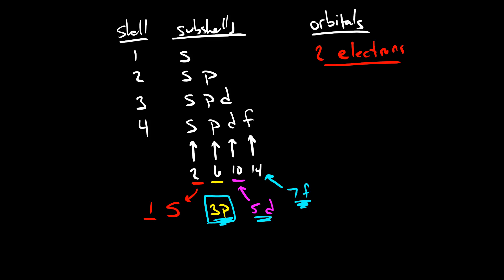S orbitals simply have the shape of spheres — S is a sphere. The nucleus is positioned directly in the middle of the sphere. What's important to know is that these orbitals are not like the Bohr model of the atom. The electron in an S orbital is not restricted to just being at one position and it's not orbiting. The electron is actually distributed equally throughout this entire orbital.